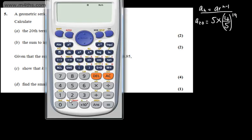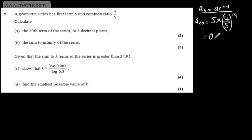So in the calculator now, 5 times by 4 fifths, which is 0.8, to the power of 19. That gives me 0.07205 continuing. So we'll have 0.072, and that's to 3 decimal places. So that's the first part done.